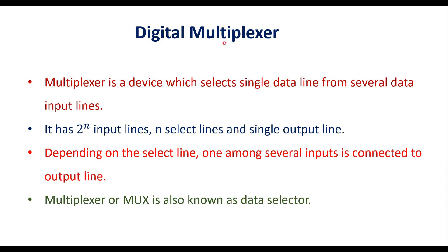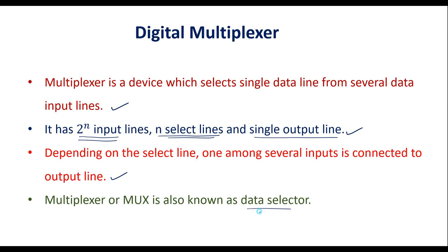In this video I will discuss about digital multiplexer, or in short we can call it as digital MUX. Multiplexer is a device which selects a single data line from several data input lines. It has 2 power n inputs, where n indicates the number of select lines, and it has only one output line. Multiplexer or MUX is also known as a data selector, because depending on the select lines it will select any one of the input lines.